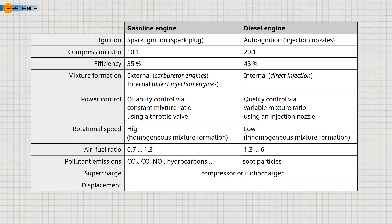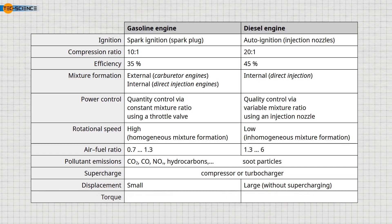So for non-turbocharged diesel engines, the only way to compensate for this power loss is to increase displacement. Therefore, non-supercharged diesel engines require significantly more displacement than non-supercharged gasoline engines to achieve the same power output. The larger displacement, in turn, results in greater torque, so that for the same power, non-supercharged diesel engines have greater torque than non-supercharged gasoline engines.